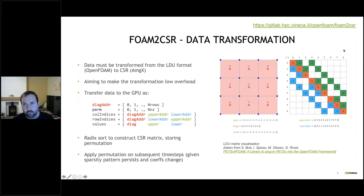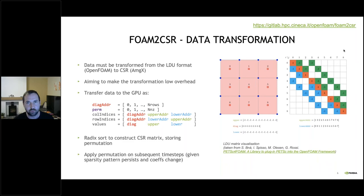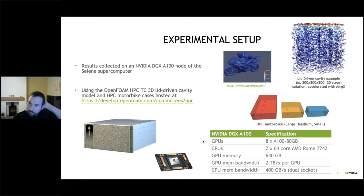The data structures passed from OpenFOAM aren't in the format needed for AMGX, which requires CSR format. The copying step is done in a way that allows us to perform a radix sort on the matrix, yielding a CSR matrix after that sort. If the sparsity pattern of the matrix persists — very common for applications without a dynamic mesh — we can reuse the permutation on subsequent time steps without re-sorting, which was a very important step in achieving efficient acceleratable data structures.